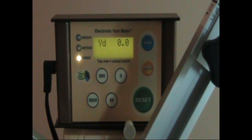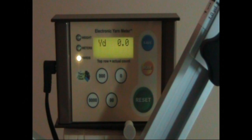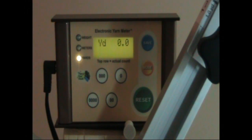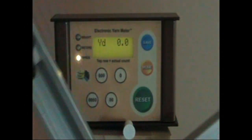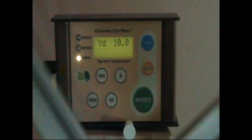Now each time the arms go around it will measure two yards and you'll see the number increment by two on the yardage counter. As you can see in the display it's gone by twos.